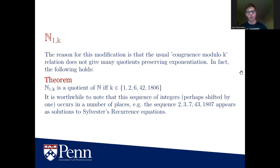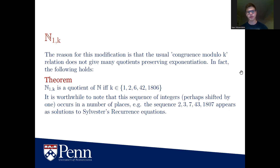Why introduce this tail? If we only took congruence modulo K, we only get five quotients that respect exponentiation — not many. The tail is needed to get a larger family of finite models. It's also worthwhile noting that this sequence of integers somewhat mysteriously appears shifted by one as solutions to Sylvester's recurrence relations, though why this happens isn't entirely clear.